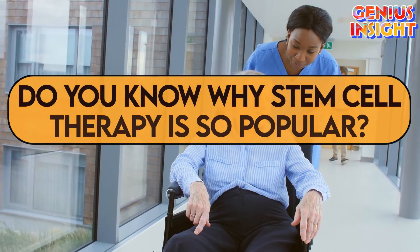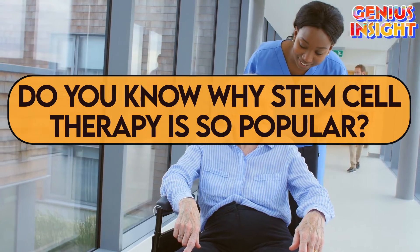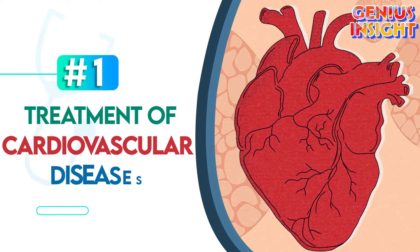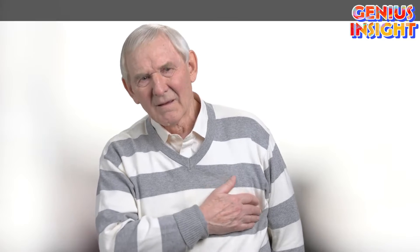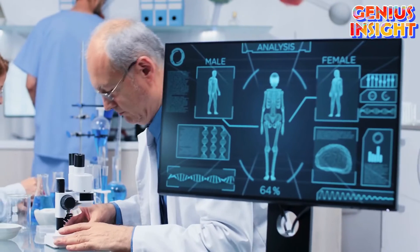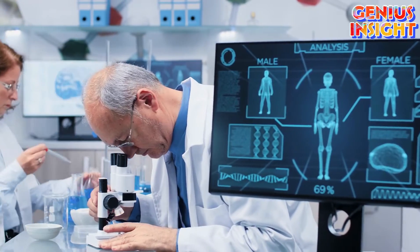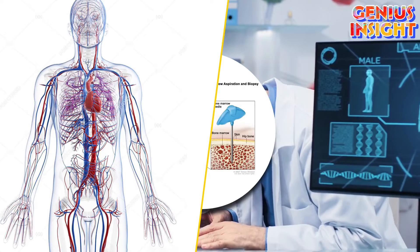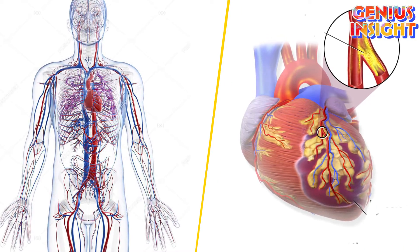Do you know why stem cell therapy is so popular? Number 1: Treatment of Cardiovascular Diseases. Cardiovascular disease can deprive heart tissue of oxygen, resulting in scar tissue, which changes blood pressure or blood flow. According to research, stem cells from the adult bone marrow may differ in the need for vascular and cardiac repair due to the secretion of various growth factors.